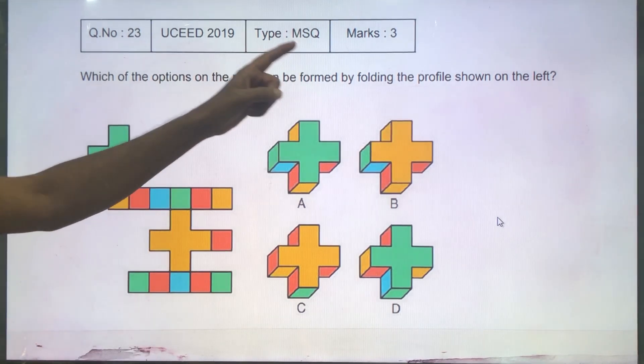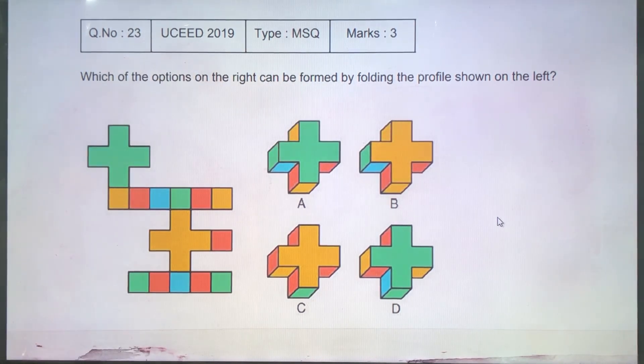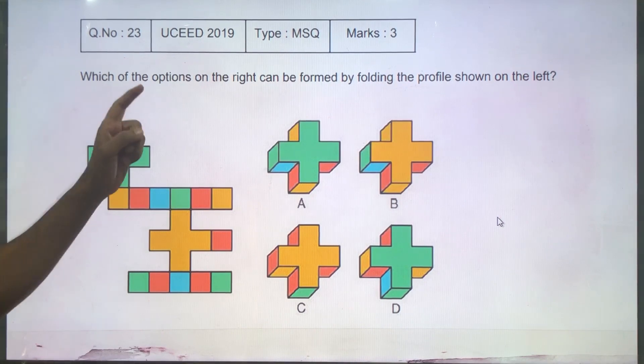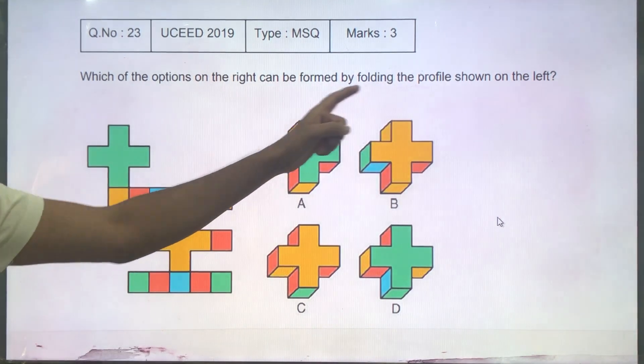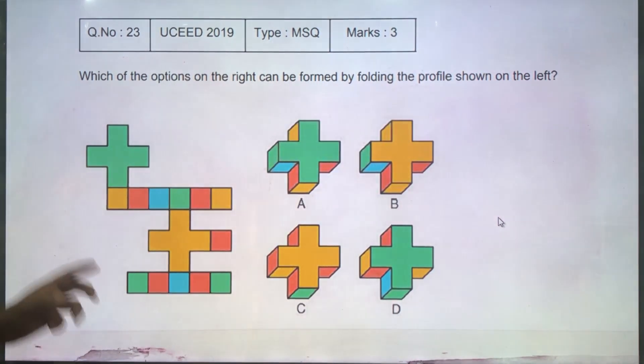This is an MSQ question for 3 marks from UCEED 2019. Which of the options on the right can be formed by folding the profile shown on the left?